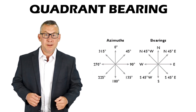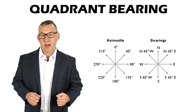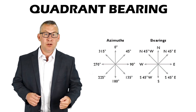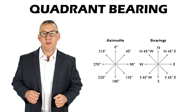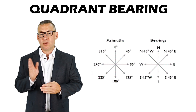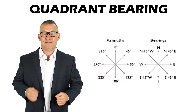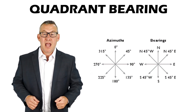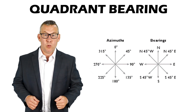Quadrant bearing is when the bearing of a line is measured as an angle from the reference meridian towards east or west. An example of a quadrant bearing is N45°E.